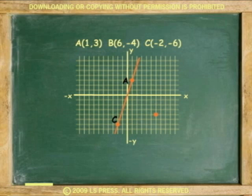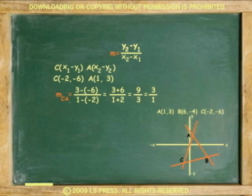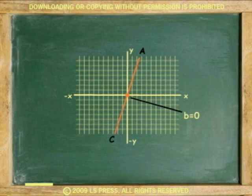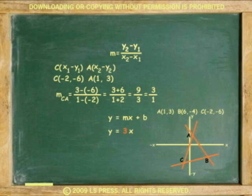Now, line CA. The slope is m equals 3 minus negative 6 over 1 minus negative 2. Or, 3 plus 6 equals 9. And 1 plus 2 equals 3. The slope is 9 over 3, or 3. And the y-intercept, 0, 0, is an empty value. Substituting the slope for m and the y-intercept for b, y equals 3x.